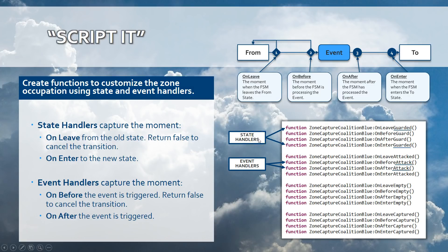You have two different kinds of handlers: state handlers and event handlers. These are functions or methods defined within the object — in this case, Zone Capture Coalition. You need to follow a specific syntax. For example, when the guarded state is being left, the 'on_leave' handler is called first. You spell it 'onLeave' with a capital O and then the name of the state.